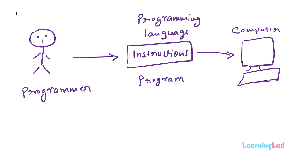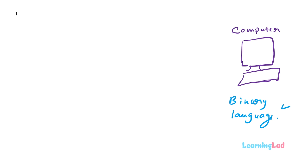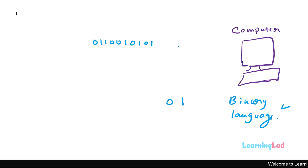You may have probably heard that computers can only understand binary language. This binary language has only two values: 0 and 1. Whatever you want to say has to be in the form of 0 and 1. Computers are built in such a way that they can recognize the pattern of 0s and 1s and work on it accordingly.